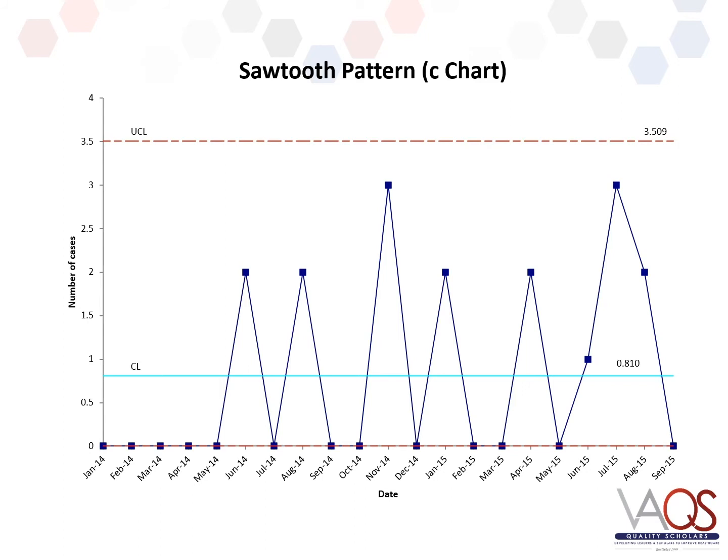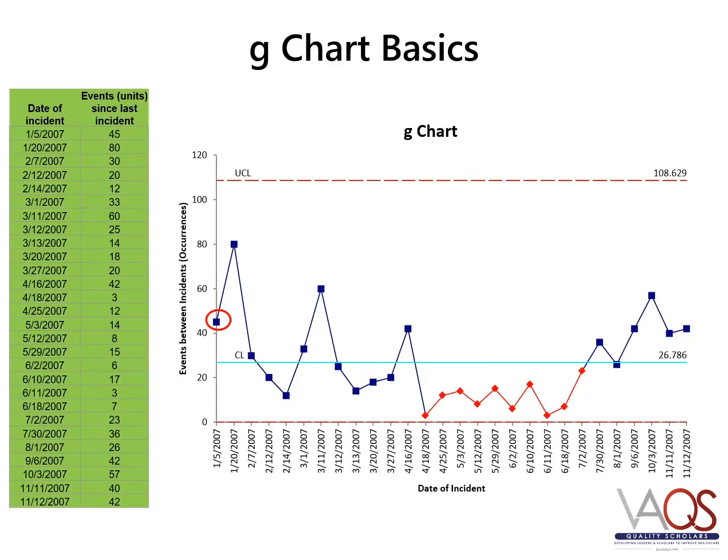Here is an example of a C-Chart in which the frequency of observations is too low or infrequent for a standard SPC analysis. Notice the sawtooth visual pattern present here. In this case, consider using a rare events SPC analysis.